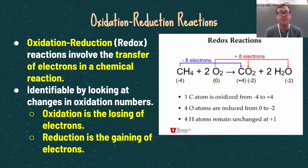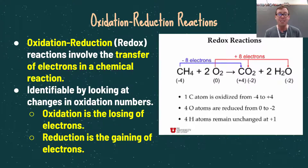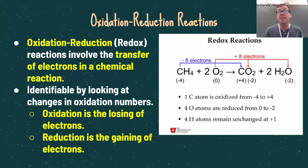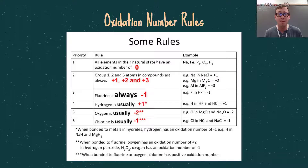Let's talk about redox reactions, or oxidation-reduction reactions. These involve the transfer of electrons in a chemical reaction, and are identifiable by looking at changes in oxidation numbers. Oxidation is the losing of electrons and reduction is the gaining of electrons. That seems counterintuitive, but the easy way to remember it is OIL RIG — Oxidation Is Losing, Reduction Is Gaining. Before we dive into that, let's figure out how we determine oxidation numbers.